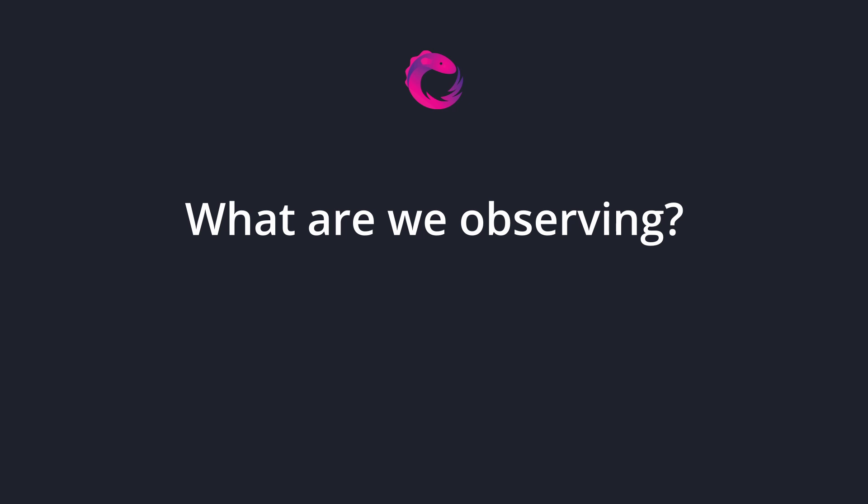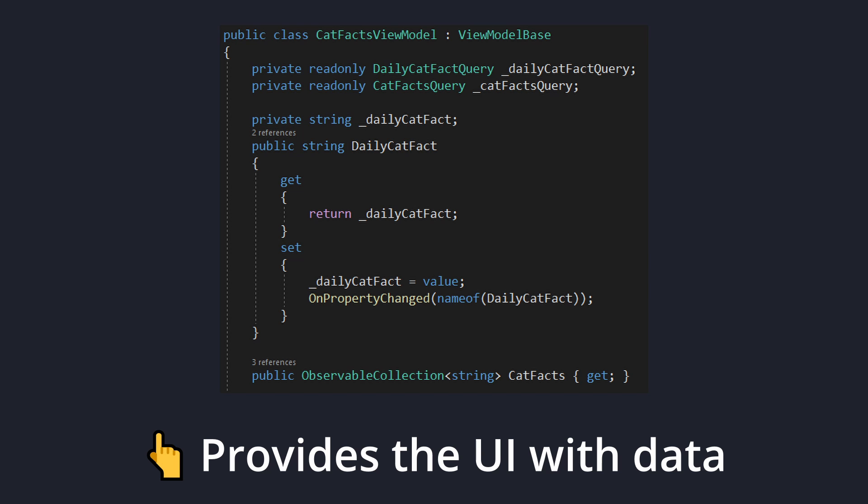Now the first step of reactivity is we need to understand what we want to observe on. In our case, we want to observe on our asynchronous daily cat fact query, as well as our asynchronous cat fact listing query. We want to be notified whenever both of those queries finish, and we ultimately want to kick off and observe on these queries as soon as our view model loads, so that we can get data on our UI as soon as possible.